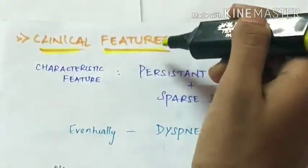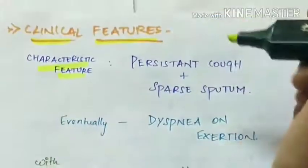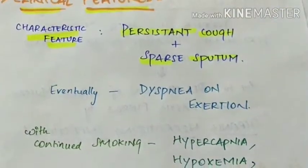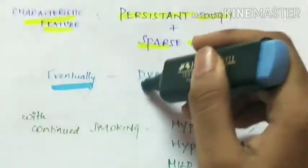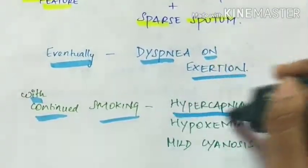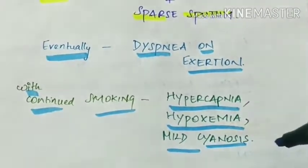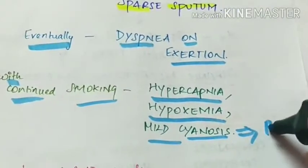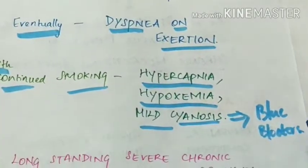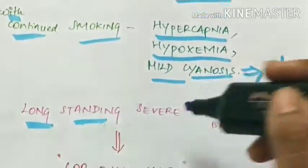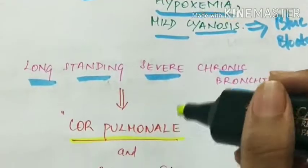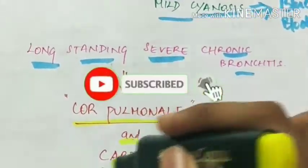Clinical features of chronic bronchitis: the characteristic feature is presence of persistent cough along with sputum production. Eventually there is dyspnea on exertion. With continued smoking there is hypercapnia, hypoxemia and mild cyanosis, due to which the patients are called blue bloaters. Long-standing severe chronic bronchitis can lead to cor pulmonale, that is right-sided heart failure due to lung disease, and cardiac failure.